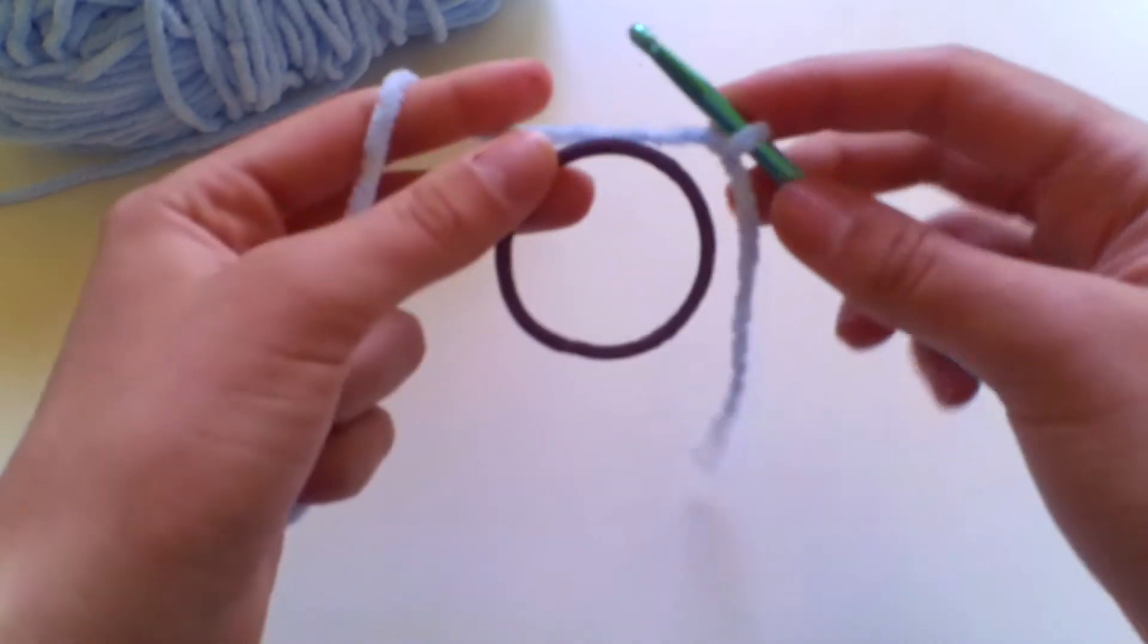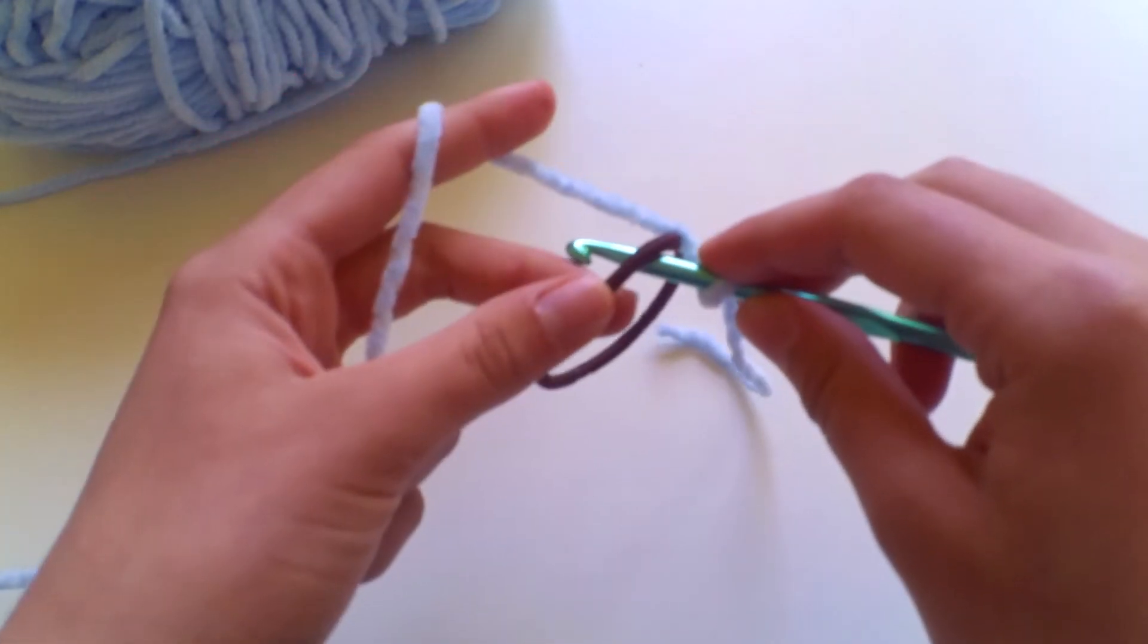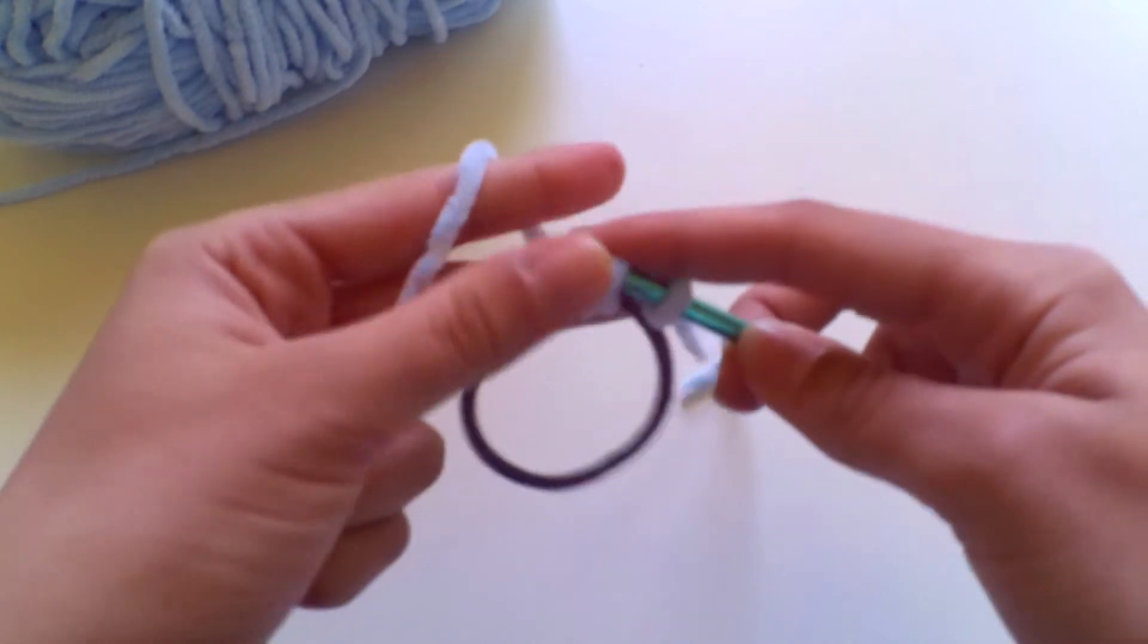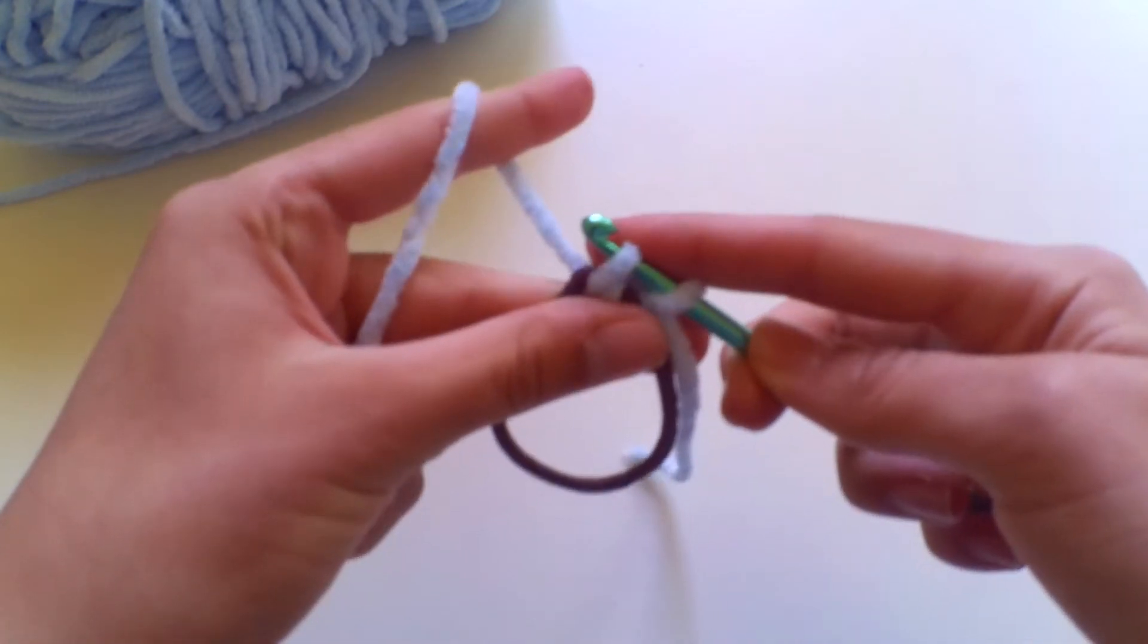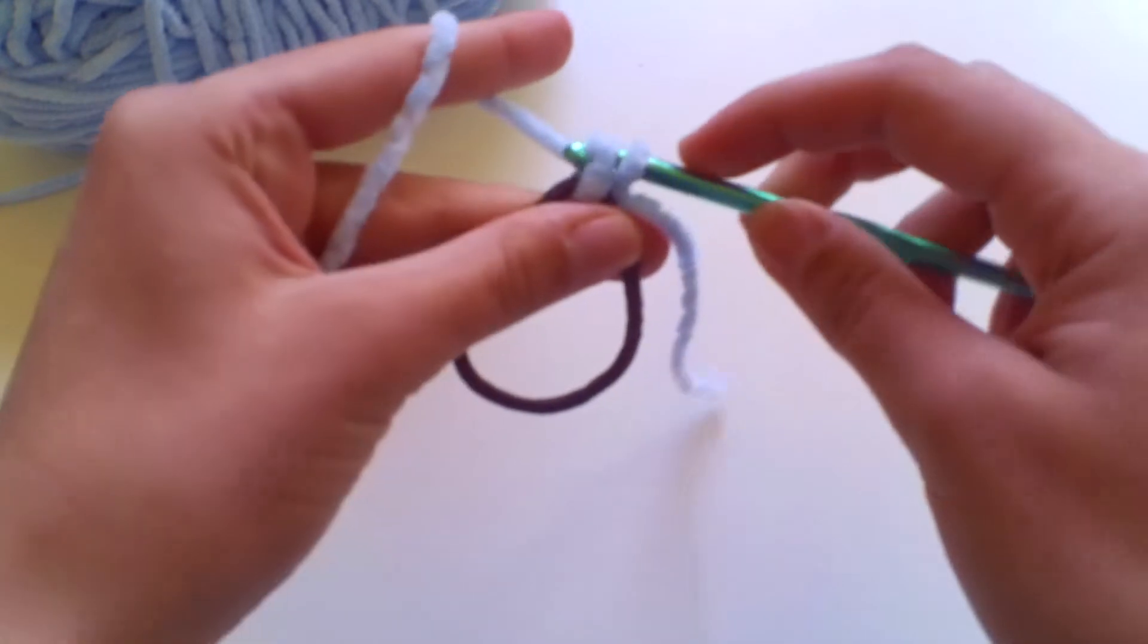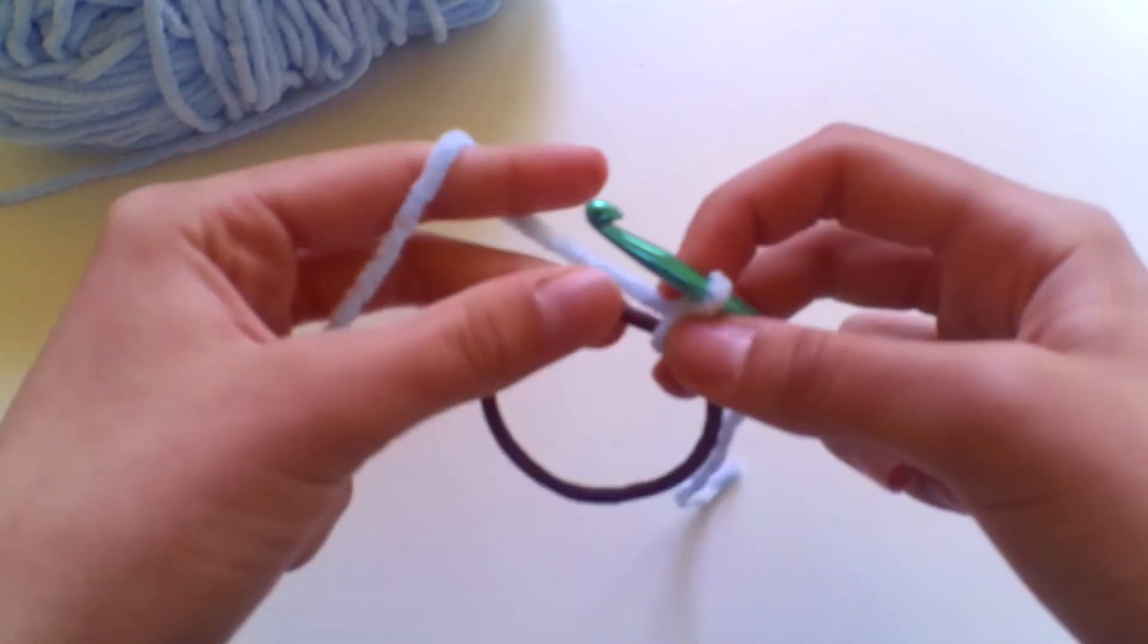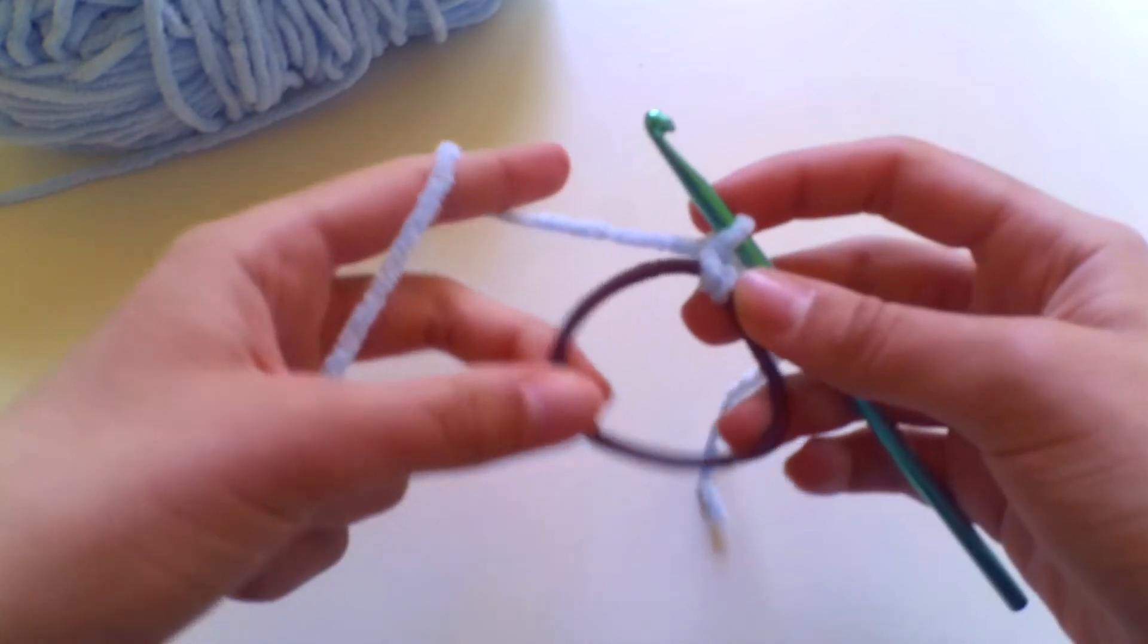So we need to attach the yarn to our bobble now. So insert your hook into your bobble, yarn over and pull up a loop and then you can just work like a double crochet. So yarn over and pull through those two loops and there your yarn should have attached to your bobble and now we can get going.